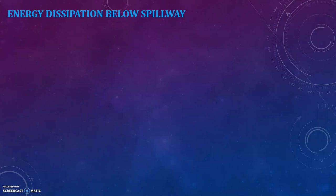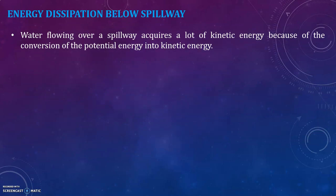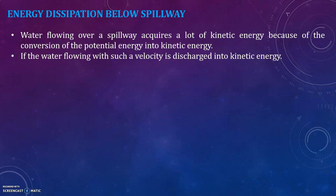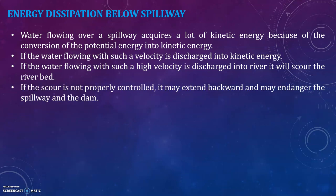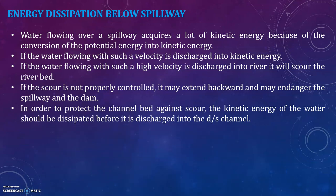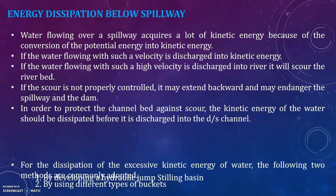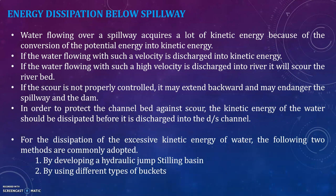Water flowing over a spillway acquires a lot of kinetic energy because of the conversion of potential energy into kinetic energy. If the water flowing with such a high velocity is discharged into the river, it will scour the river bed. If the scour is not properly controlled, it may extend backward and may endanger the spillway and the dam. In order to protect the channel bed against scour, the kinetic energy of the water should be dissipated before it is discharged into the downstream channel.